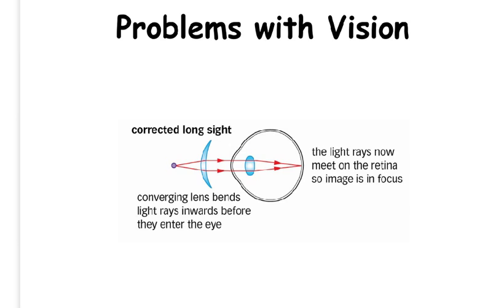Like short-sight, long-sight can be corrected using lenses but this time a converging or convex lens is used to bend the light rays inward before they enter the eye. This means the rays of light now meet on the retina and the final image is in focus.